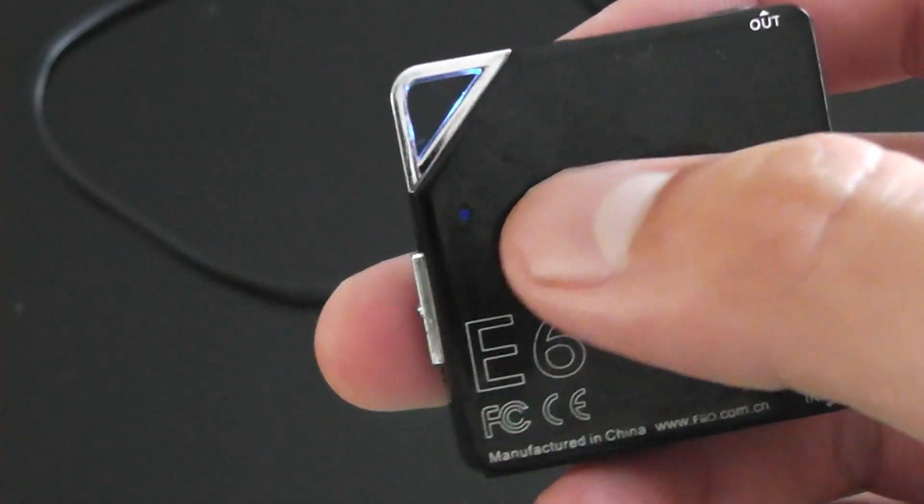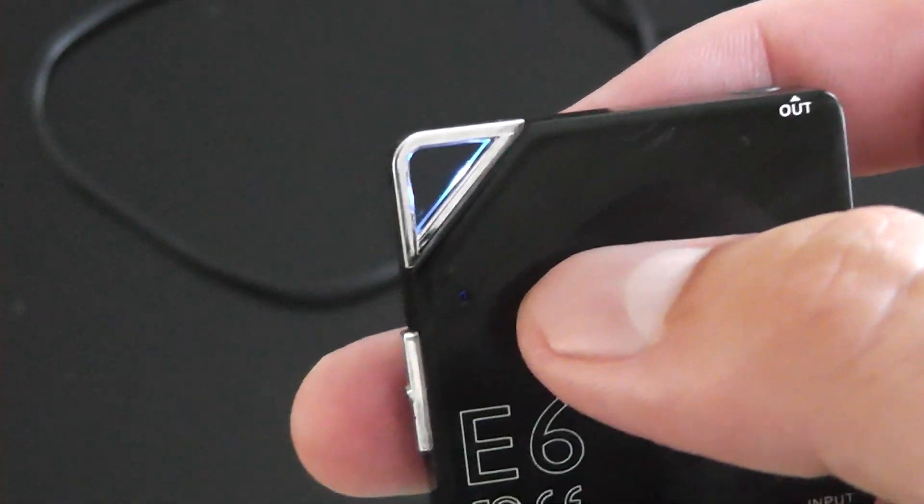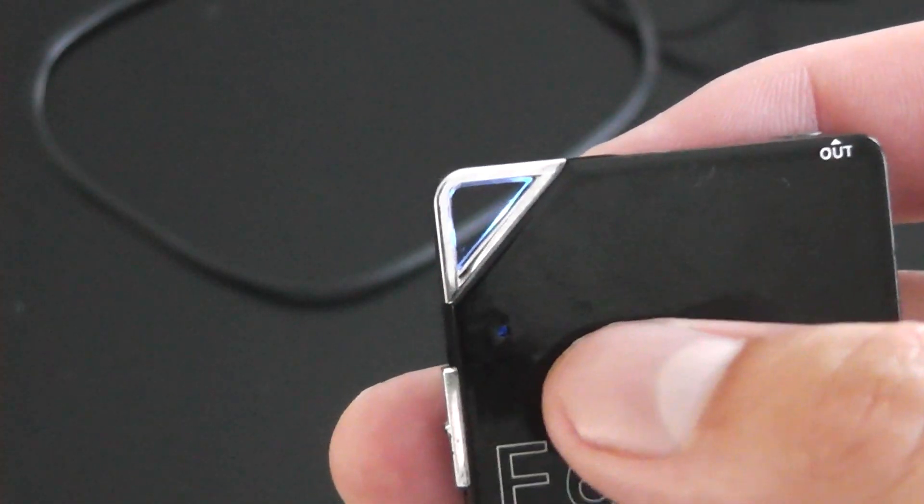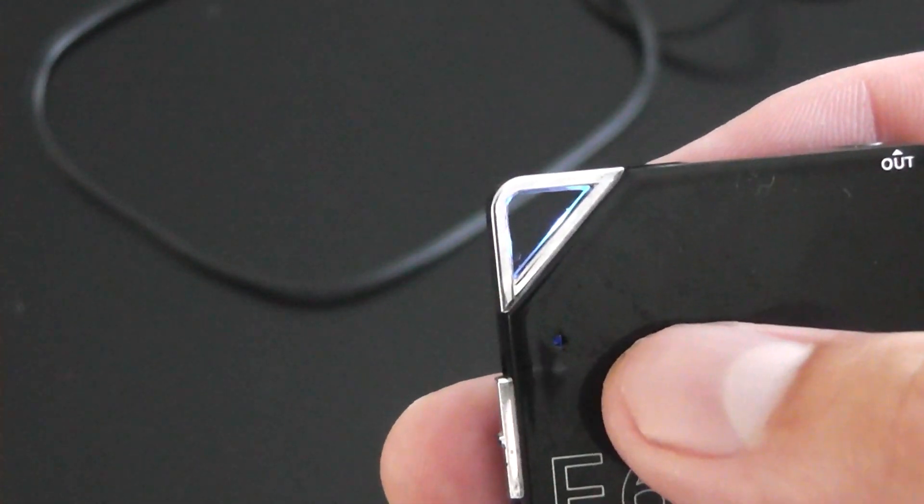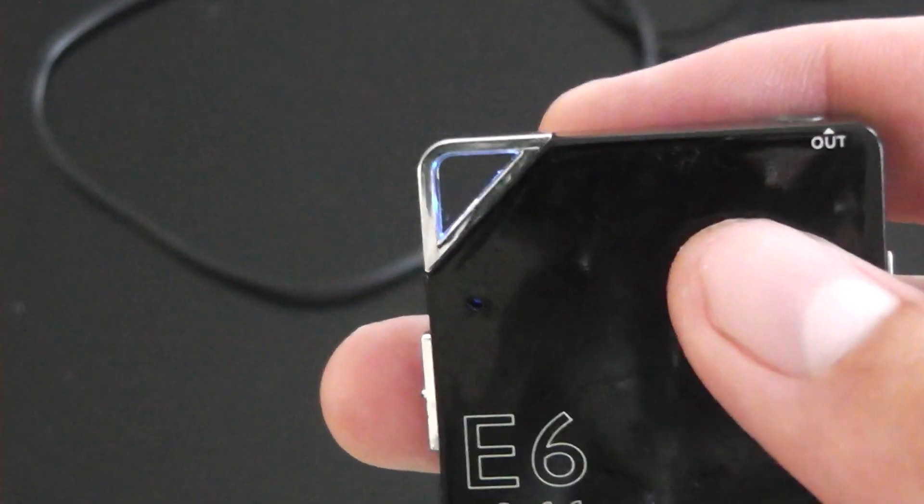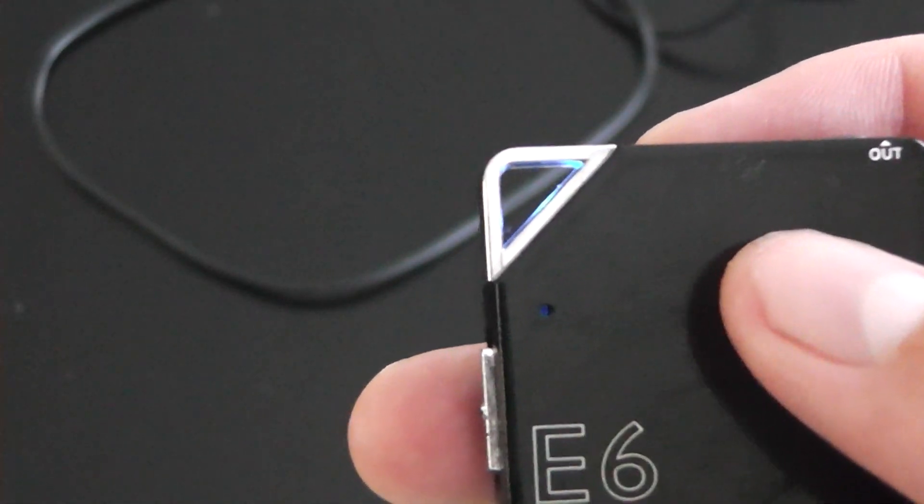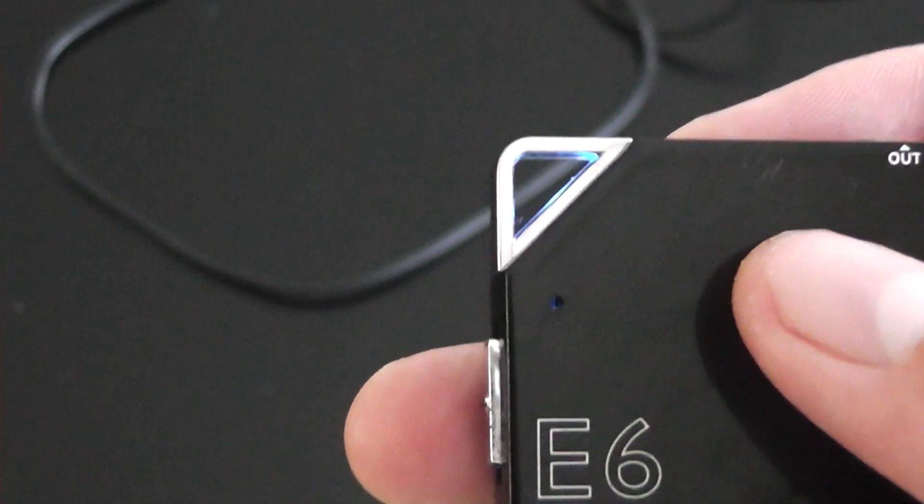All these equalizer settings that I showed you before, they all actually work. The first one, the red light, makes everything sound much more bassier. If you like bass, or like hip-hop, rap, that type of bass heavy music. The other two work as said in the instruction manual and the features of this product.